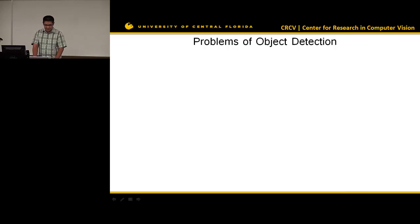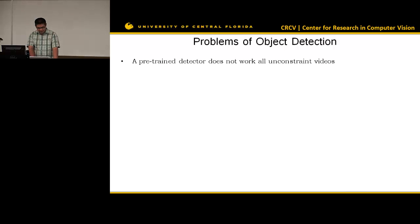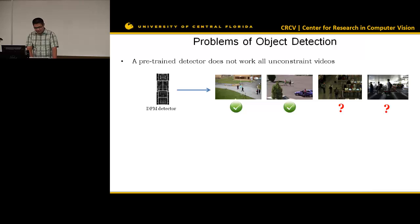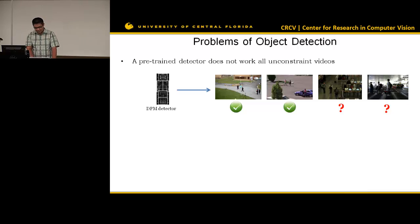The motivation is that when we apply a pre-trained object detector to a video, we might have some problems. A pre-trained detector does not work on unconstrained videos. We have a DPM detector with pre-trained models, and when we apply it to some videos, it might be good for some, but for others it will fail, because these videos are very different in terms of viewpoints, backgrounds, and even nations.